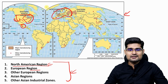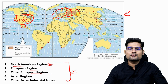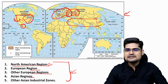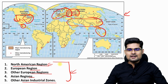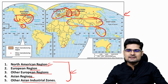In Asia, the major chunk includes India, China, and other Asian industrial zones in the Indo-Pacific — Singapore and other areas. There are also industrial hubs in Australia, South Africa, and South America. These are the major belts in the world where you have manufacturing or industrial regions.